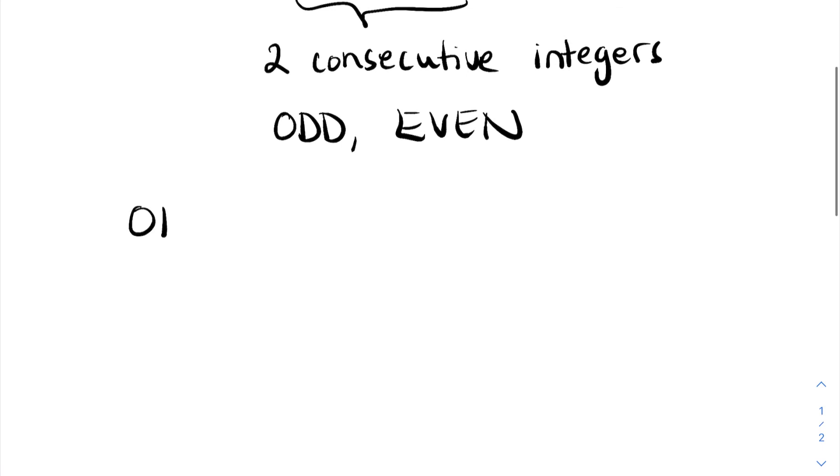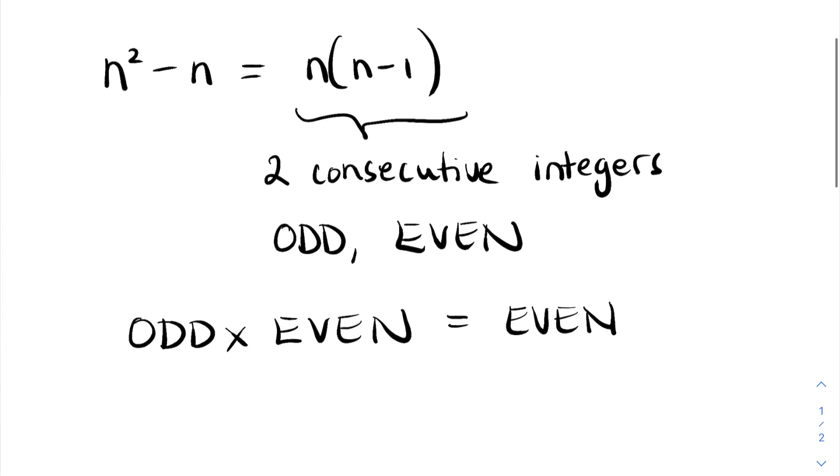Now, it is always true that odd times by even is even. So we have proven that n squared minus n is even for all natural numbers n. And that concludes the proof by deduction.